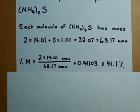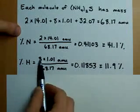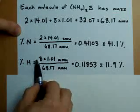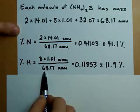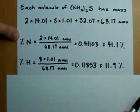Doing the same for hydrogen, we have 8 times 1.01 atomic mass units of hydrogen. The total for the molecule is 68.17. Dividing gives 0.11853, which is approximately 11.9%.